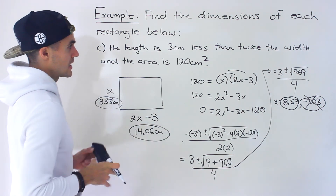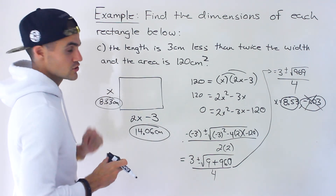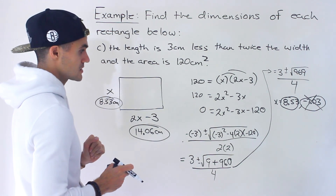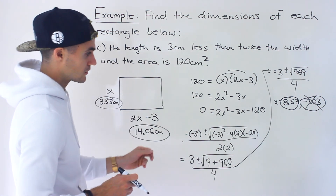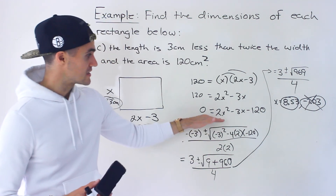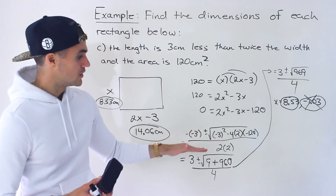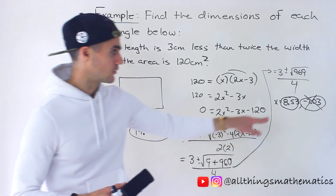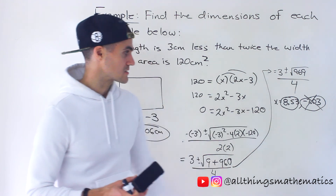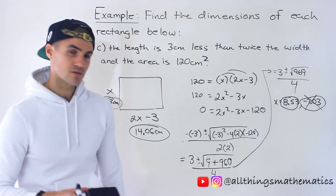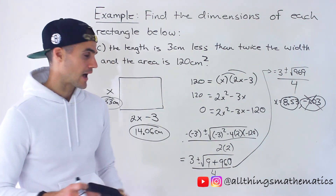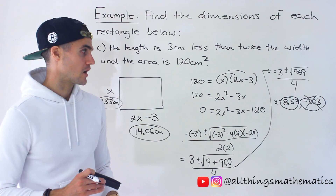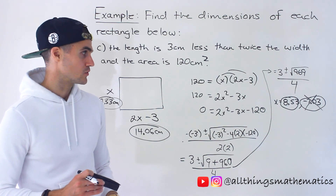So those are the dimensions for the rectangle in part C — 8.53 centimeters for the width and 14.06 centimeters for the length. This is an example of where the equation didn't factor smoothly, so we had to use the quadratic formula to get those decimal values. Sometimes that's going to happen — the answers won't always be integers.